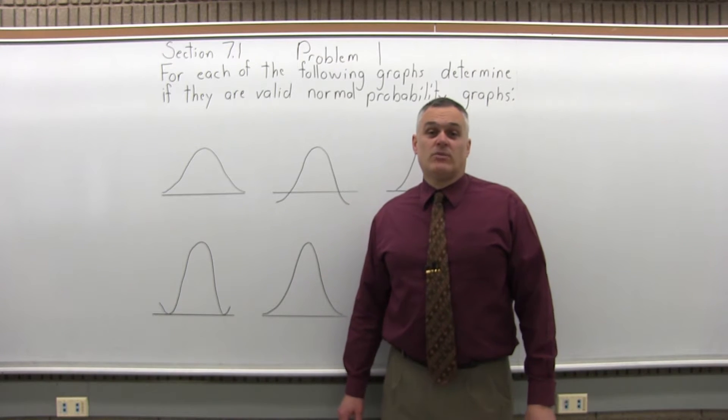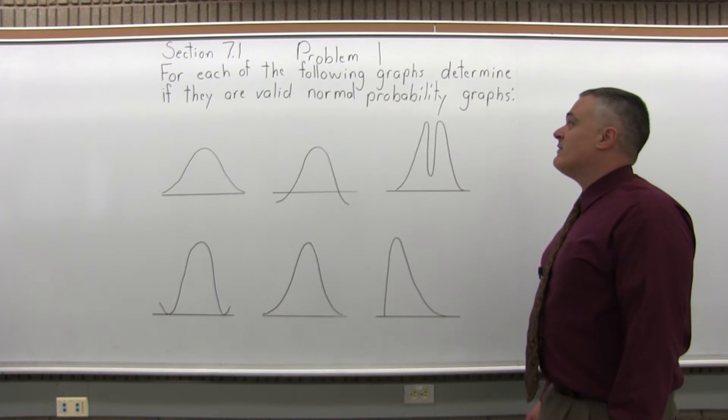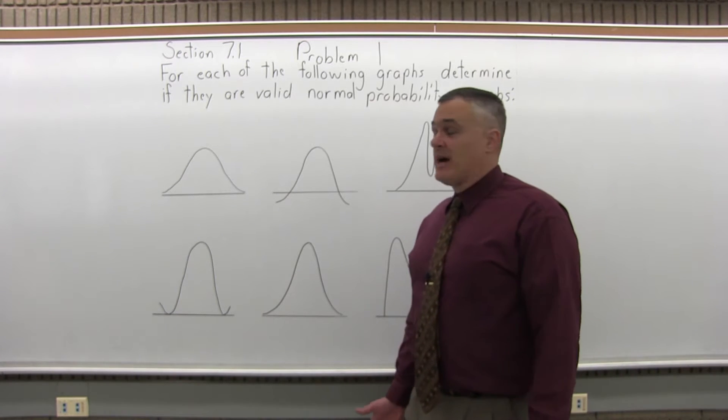This is Section 7.1, Problem number 1. It says for each of the following graphs determine if they are valid normal probability graphs. And there are six graphs.